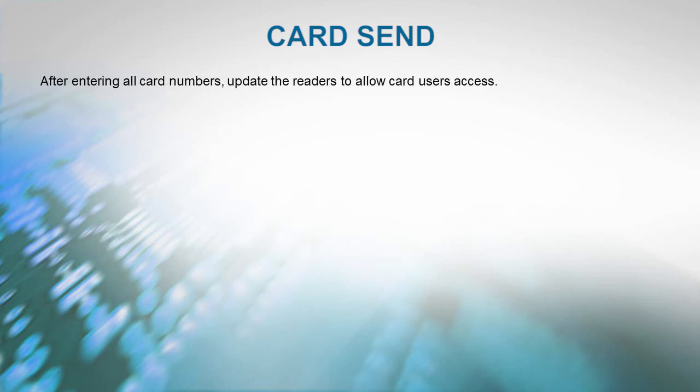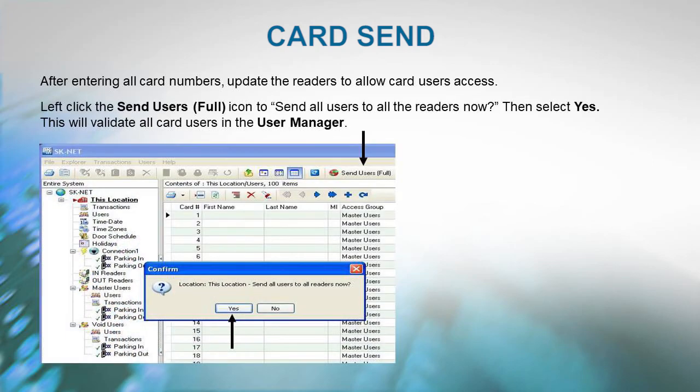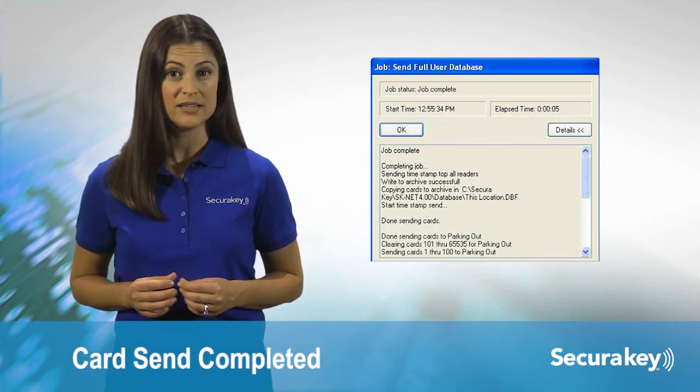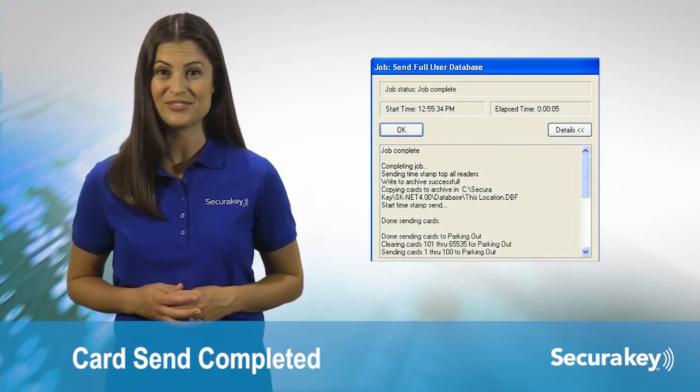Card Send: Once you have entered all your card numbers, you will need to update the readers so the card users in your system will start allowing access. Just left-click on the Send Users icon to send all users to all the readers now. Then select Yes. This will validate all your card users in the User Manager. After the card send is complete, your users are ready to start using the system.